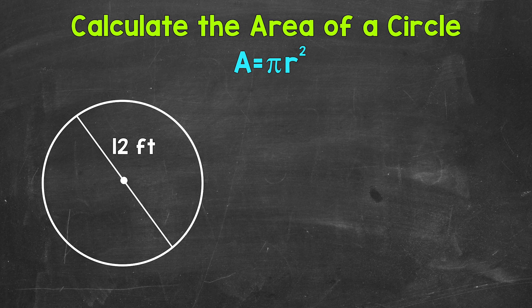Now the formula we use for the area of a circle is area equals pi r squared, so pi times the radius squared.